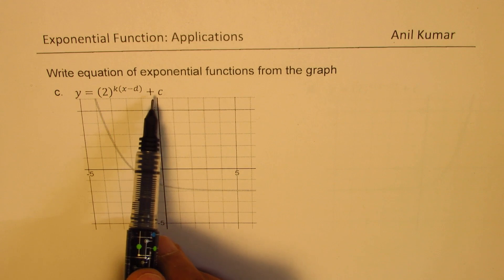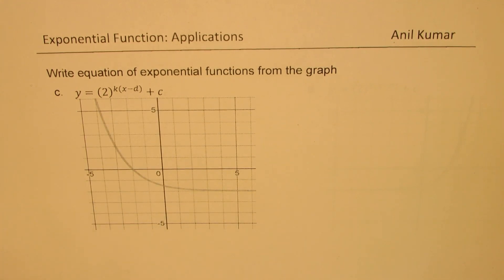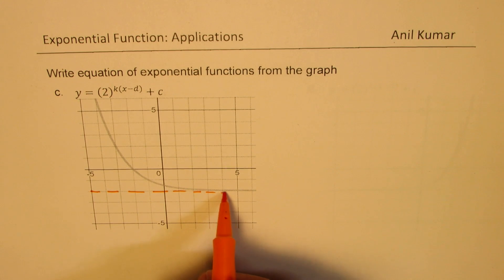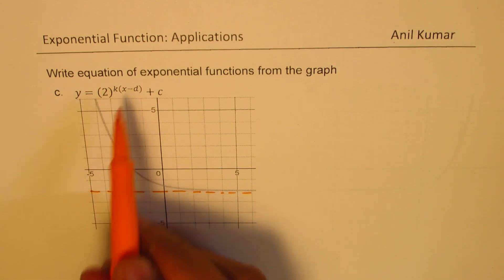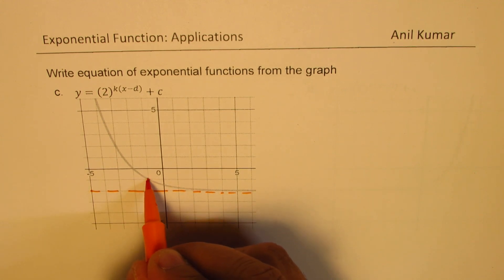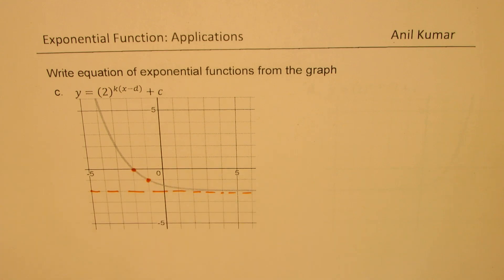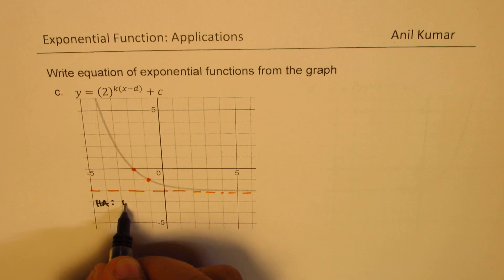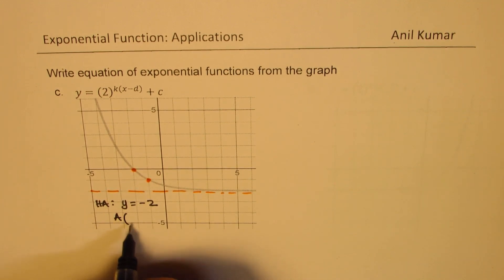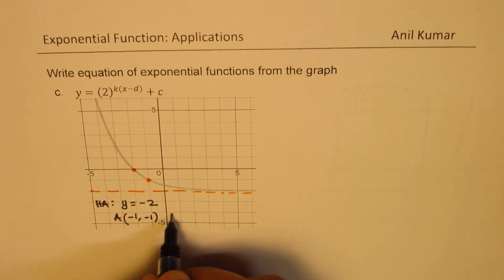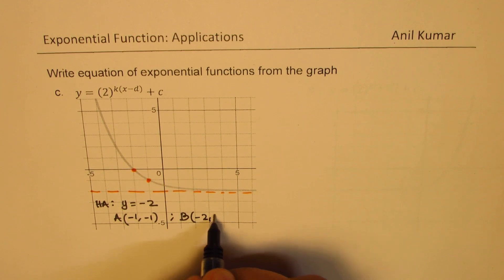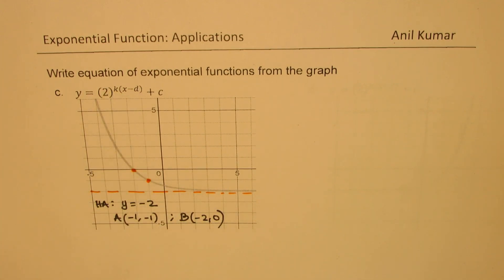Part C: write the equation of the exponential function from the graph in the form y equals 2 to the power of (kx minus d) plus c. We look for the horizontal asymptote, which is at y equals minus 2 — that's your horizontal asymptote. Since there are two other parameters, we look at two additional points: (−1, −1) and (−2, 0). Those two points will give us the values of k and d.